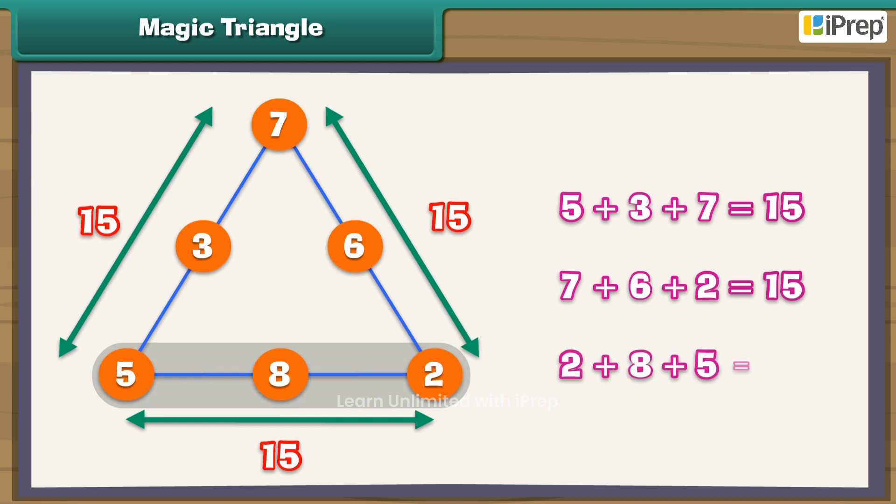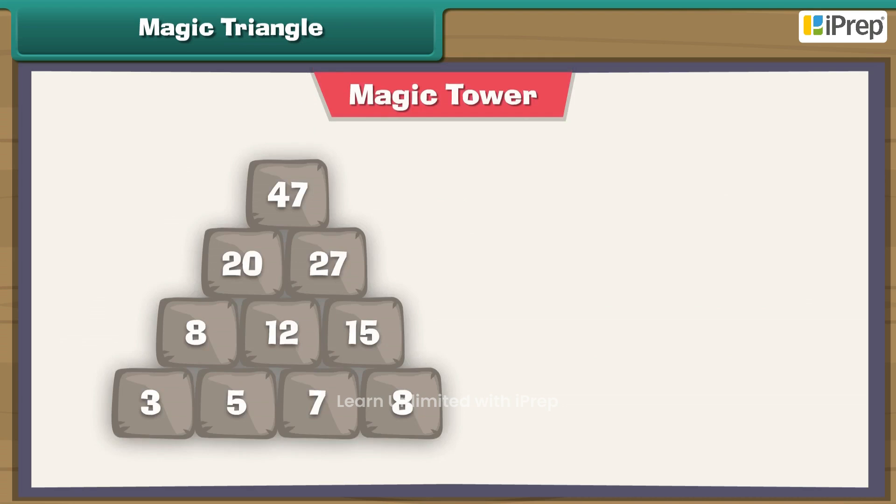2 plus 8 plus 5 equals 15. Magic tower. Look at this number stones arranged as a tower. Let us take the bottom row.